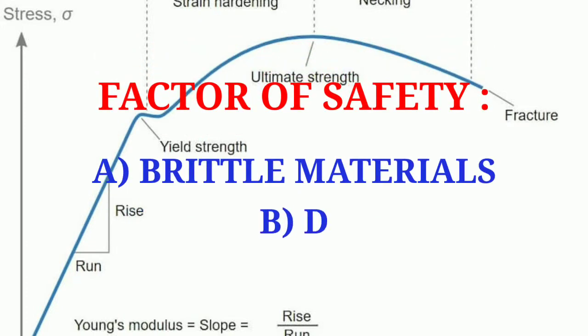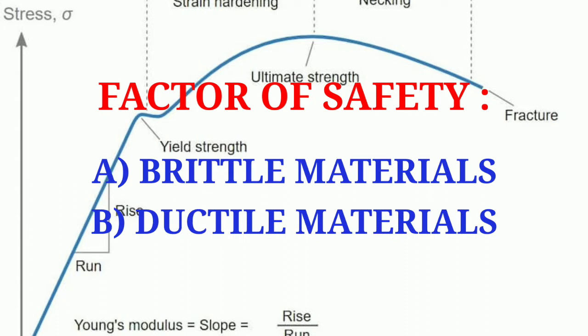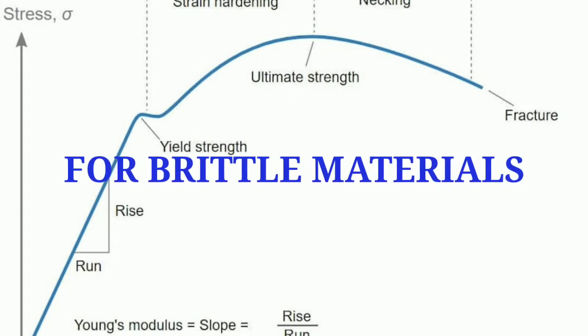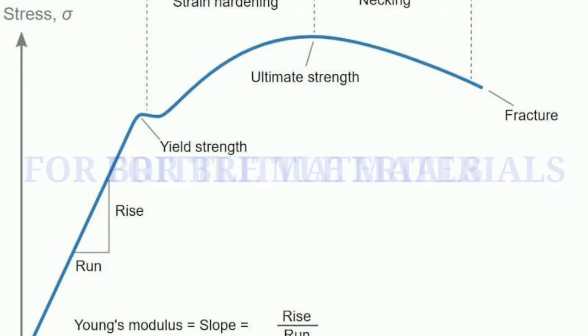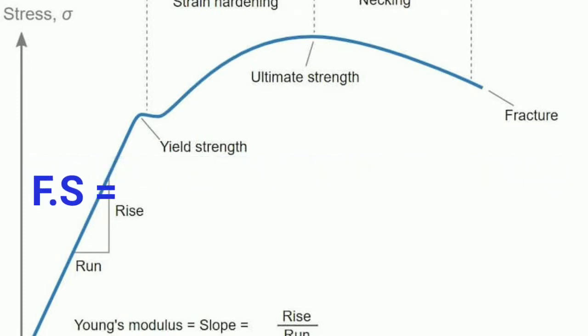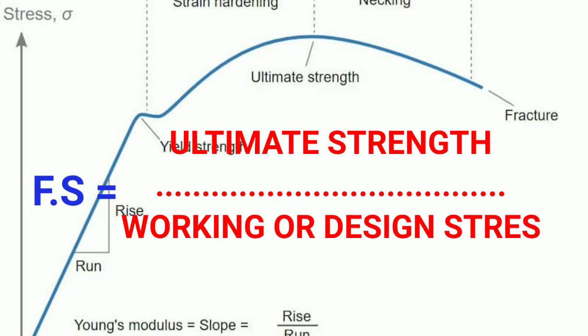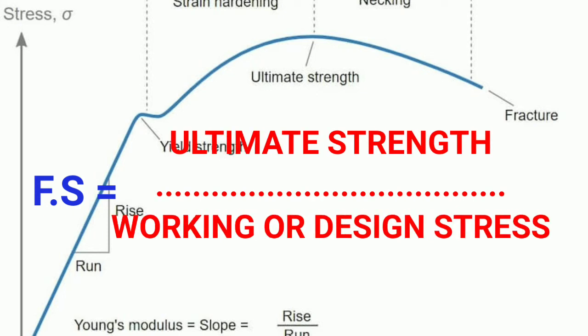In factor of safety, based on two categories — brittle and ductile materials — the factor of safety depends on different formulas. In the first case, for brittle materials, the factor of safety is ultimate strength to working or design stresses. This formula is ultimately used for every problem.